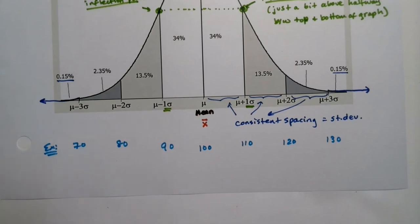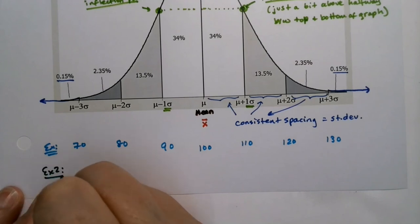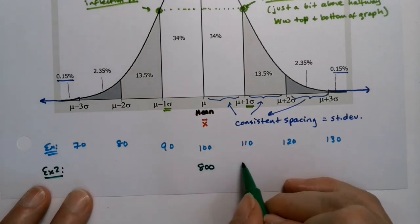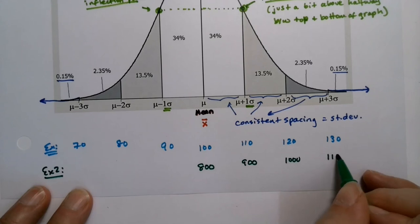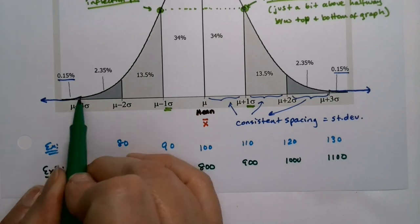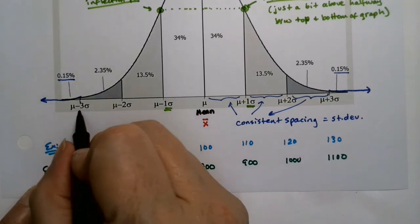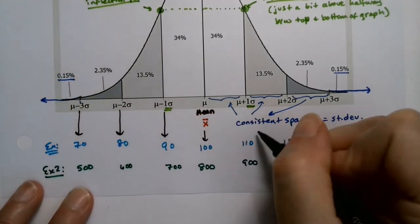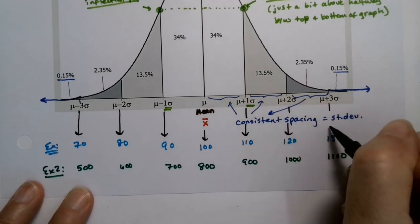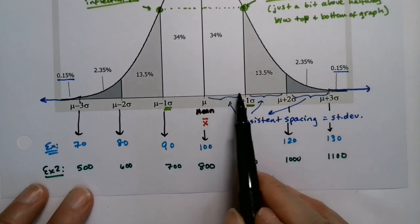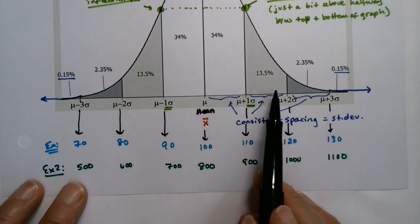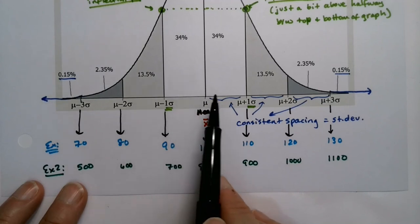But on a different example, say example two, I could say the mean was 800 and the standard deviation is 100. So that would make this 900, 1000, 1100. Then this would be 700, 600, 500. So those vertical lines change every time, the numbers that go with them change every time. And you can see now hopefully why you need consistent spacing, because if it's 10, 10, 10, then that needs to be 10 on your number line every time. Or if it's 100, 100, 100, 100, you can't have some of them narrower and some of them skinnier or wider. They all have to be exactly the same width every time.